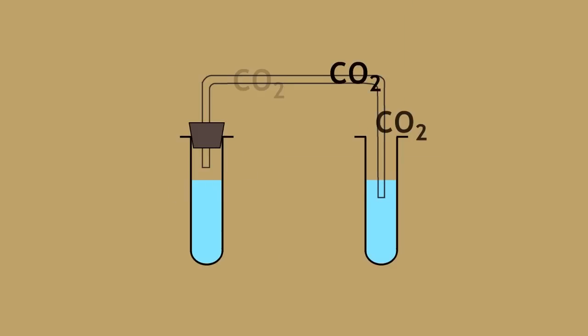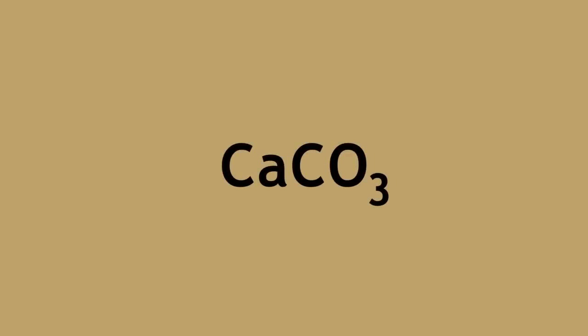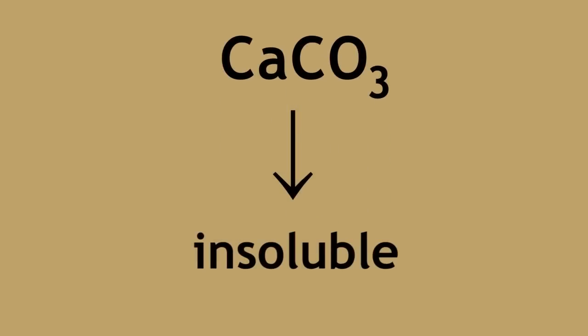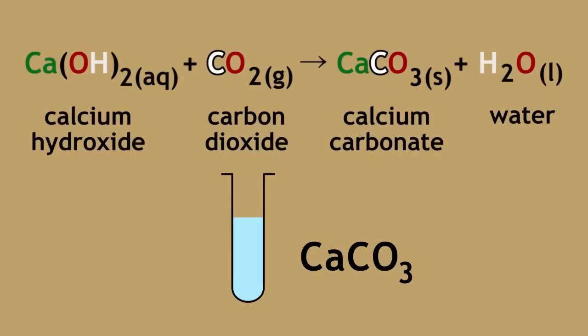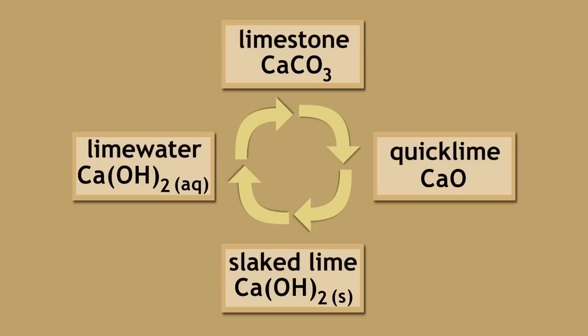When carbon dioxide is passed through lime water, calcium carbonate is formed. If we continue to pass carbon dioxide through lime water, it will turn clear again because of the formation of calcium hydrogen carbonate. As calcium carbonate is insoluble in water, this is why lime water appears milky. We have now completed the limestone cycle.